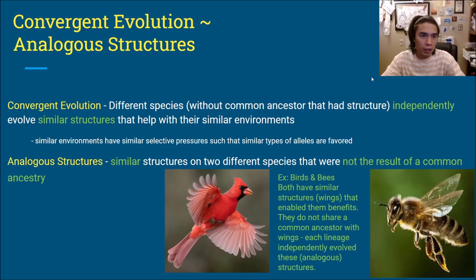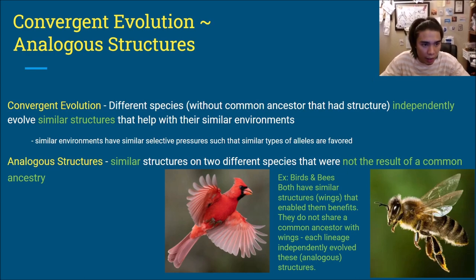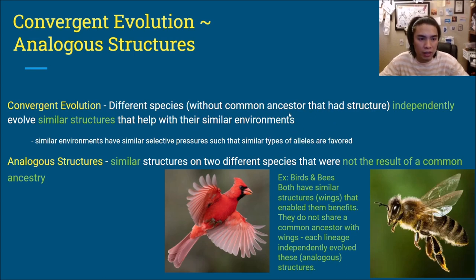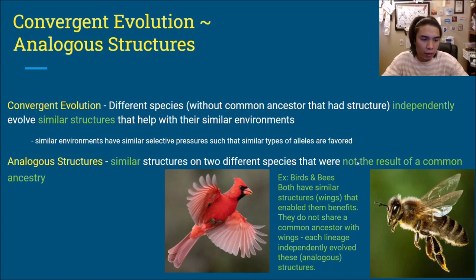Next is convergent evolution, which is completely different from co-evolution — you'll probably get a question on the exam trying to trick you. Convergent evolution is where different species without a common ancestor independently evolve similar traits suited to similar environments. Similar environments create similar selective pressures, which favor similar alleles, resulting in similar traits. For example, birds and bees don't have a common ancestor that had wings, but both evolved similar structures. These similar structures are called analogous structures, and importantly they were not the result of a common ancestor.